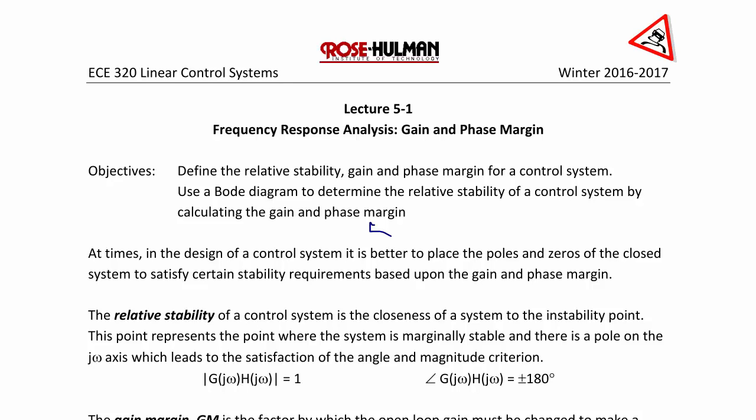Hello and welcome back. Today we will start Lecture 5-1 on Frequency Response Analysis: Gain and Phase Margin. The objectives are to define the relative stability, gain, and phase margin for a control system, and to use a Bode diagram to determine the relative stability of a control system by calculating the gain and phase margin.